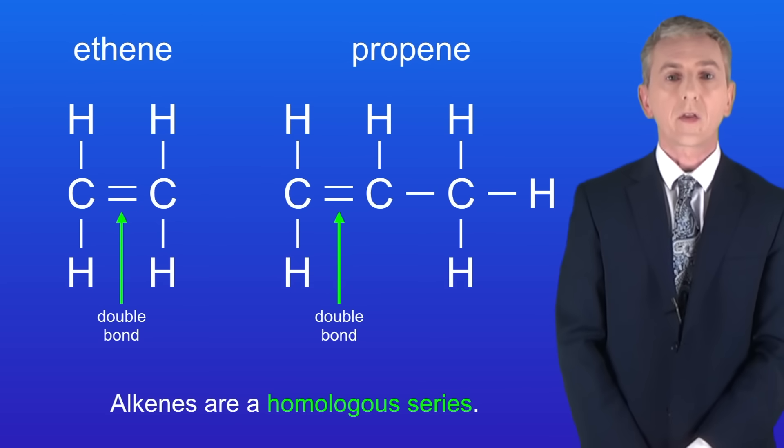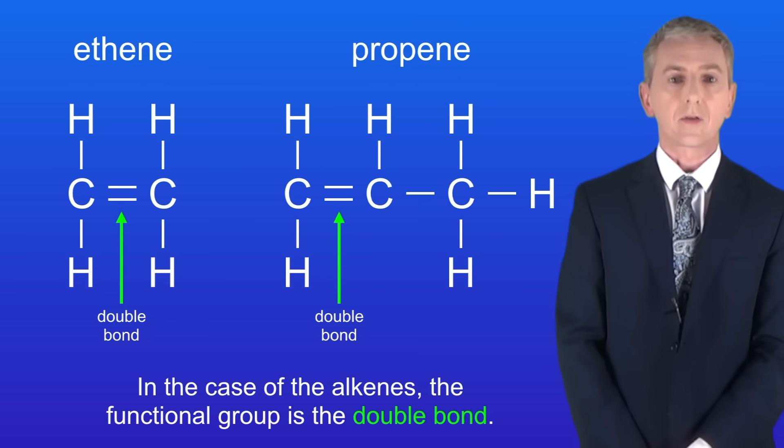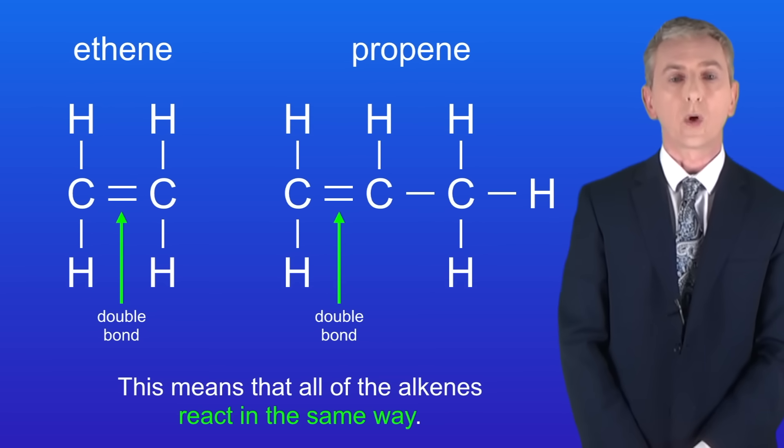In the last video we saw that the alkenes are a homologous series and remember that all of the molecules in a homologous series have the same functional group. So in the case of the alkenes the functional group is the double bond. This means that all of the alkenes react in the same way.